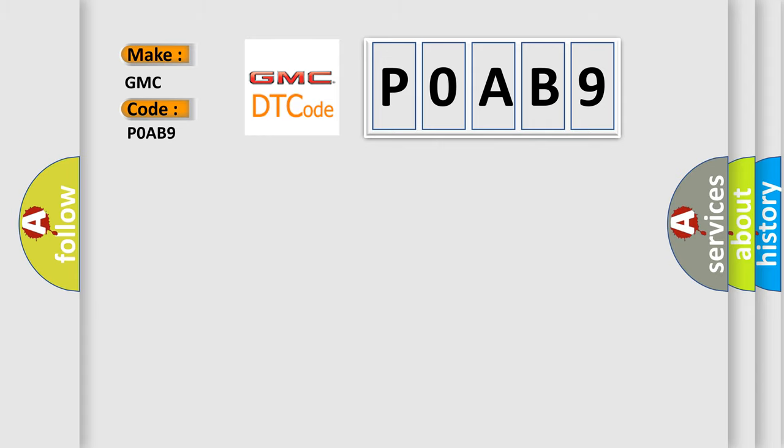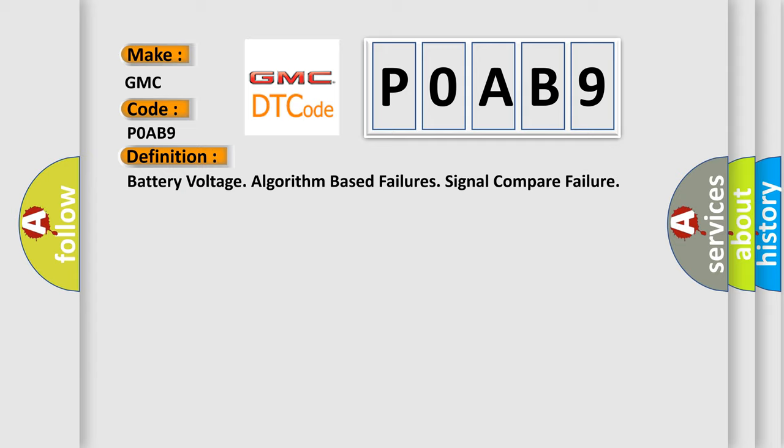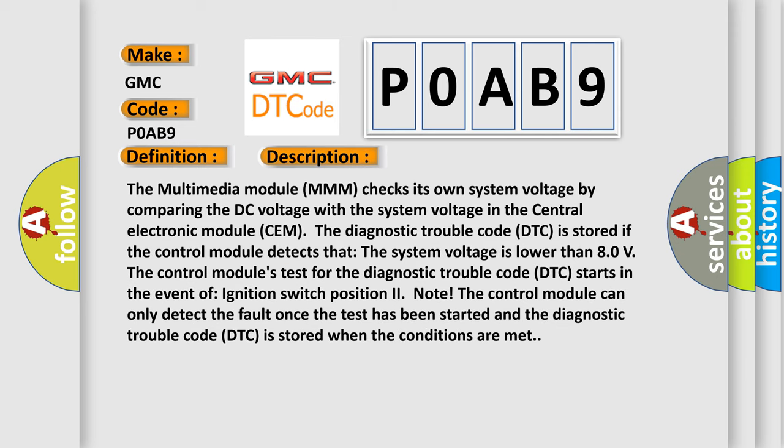The basic definition is Battery Voltage Algorithm Based Failures Signal Compare Failure. And now this is a short description of this DTC code. The multimedia module MMM checks its own system voltage by comparing the DC voltage with the system voltage in the central electronic module SEM.